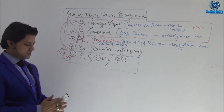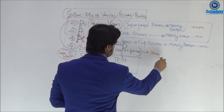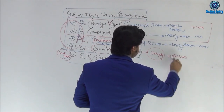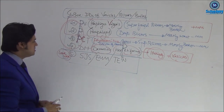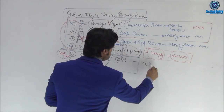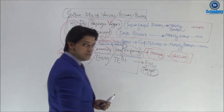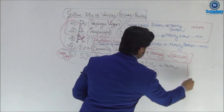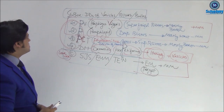Next, Dermatitis Herpetiformis: 'dermatitis' means itching, and 'herpetiformis' means vesicular eruptions — so the key features are itching and vesicles only. Regarding Stevens-Johnson Syndrome and Erythema Multiforme Major: the key feature is target lesions with mucous membrane involvement — EM plus mucous membrane involvement equals EMM.